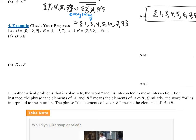Let's look at example 4. It says let D equal the set 0, 4, 8, 9. Let E be the set 1, 4, 5, 7. And let F be the set 2, 6, 8.